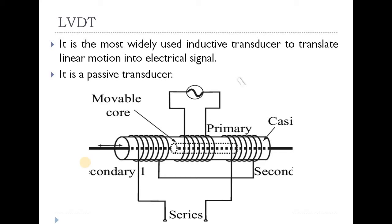LVDT is an absolute measuring device that converts linear displacement into electrical signals through the principle of mutual inductance. It is also a passive transducer. We have already discussed active transducers and passive transducers.